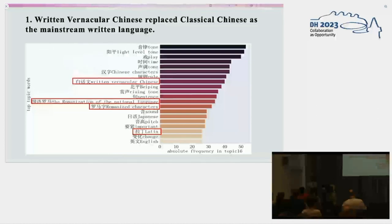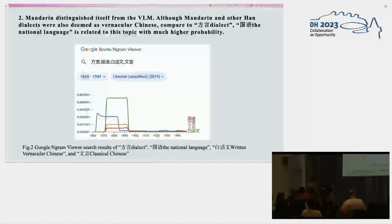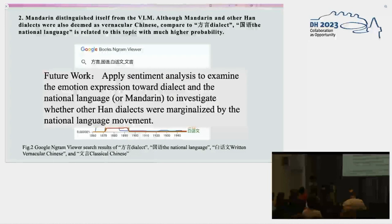This fact has been overlooked in existing scholarship. Second, Mandarin distinguished itself from the vernacular language movement, although Mandarin and other Han dialects are all regarded as vernacular Chinese. Compared to dialects, the national language is related to this topic with much higher probability. However, when we input the same phrase in Google Ngram, we find that the word frequency of the national language did not show an overwhelming advantage over dialects, even in its high period in the late 19th and early 20th centuries. In future work, we will apply sentiment analysis to examine emotion expressions toward dialects and the national language, to investigate whether Han dialects were marginalized by the national language movement.